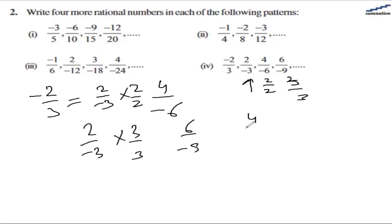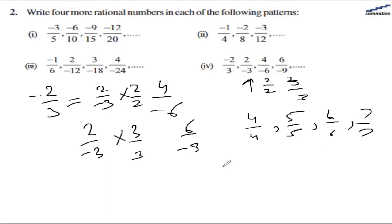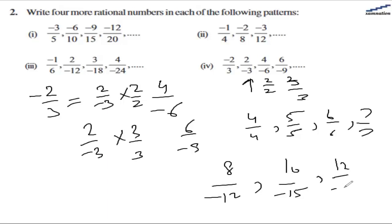For the next terms in part four, we multiply the second term by 4/4, 5/5, 6/6, and 7/7. So the four new rational numbers are: 8/(-12), 10/(-15), 12/(-18), and 14/(-21). These will be the terms in this pattern.